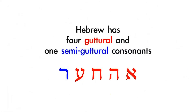In addition to five final forms and six begad kafat letters, Hebrew also has a group of consonants known as the guttural consonants. Hebrew has four guttural and one semi-guttural consonant. The four guttural consonants are Aleph, He, Chet, and Ayin. The one semi-guttural is Resh. For now, you don't need to know anything else about these consonants except that they are grouped together as gutturals. Aleph, He, Chet, and Ayin are full gutturals, but Resh is the semi-guttural. Later, we'll learn some rules that apply to these guttural consonants.